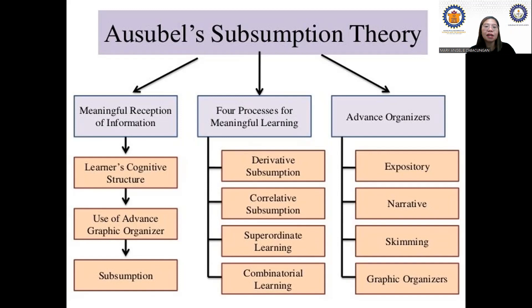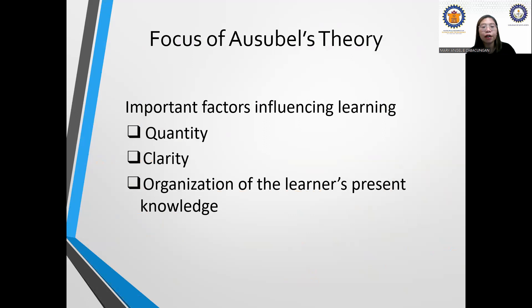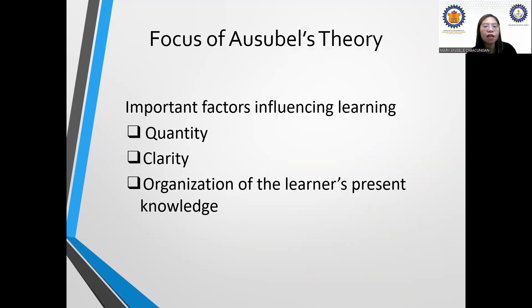The focus of Ausubel's theory of subsumption involves important factors influencing learning: quantity — how much you can actually gain or acquire; clarity — how clear and understandable it is for a learner; and organization of the learner's present knowledge — how new knowledge is being integrated into the mind.